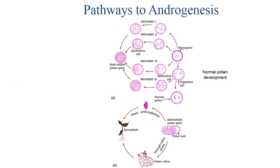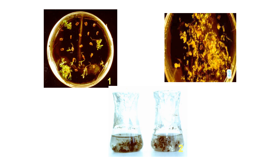This is the pathway of androgenesis, where the normal microspore with different pathways will give rise to different stages of embryogenesis. This slide is about haploid induction — how the haploid plant is generated in the culture medium.